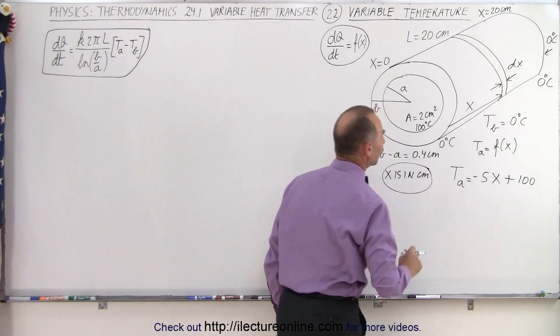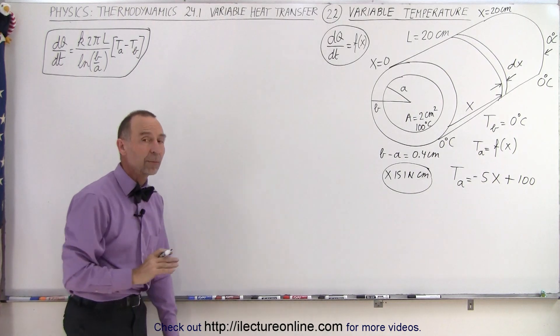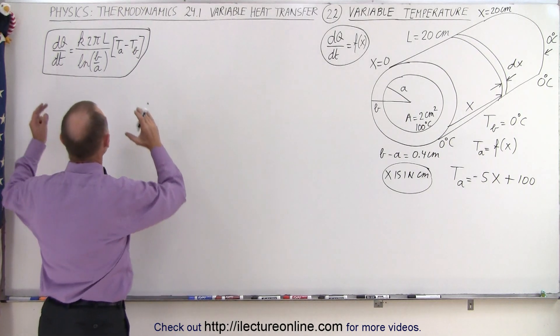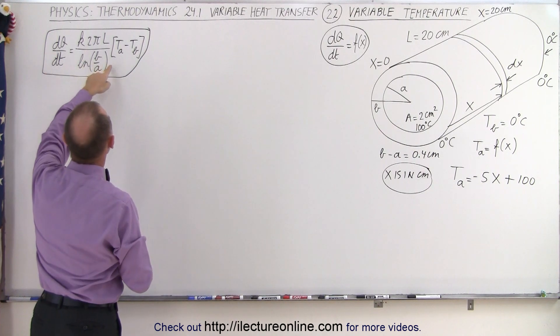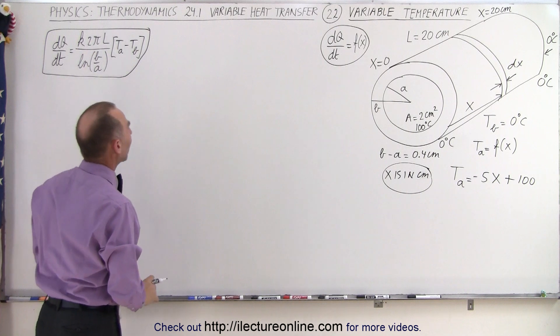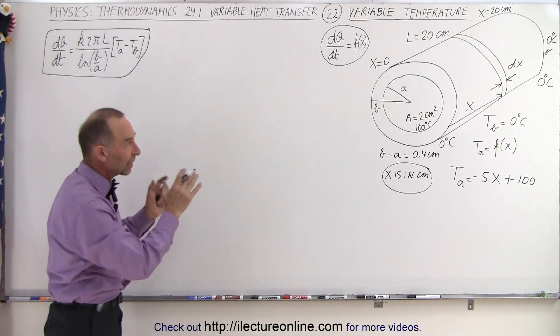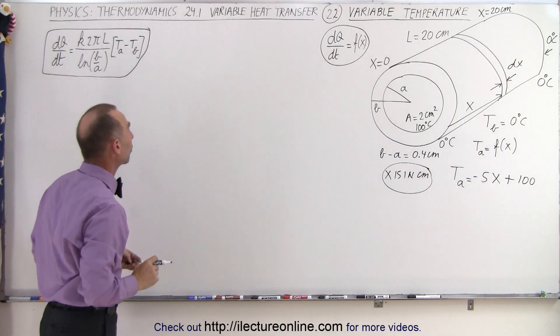We kept the equation that we derived in the previous couple of videos. This is the dq/dt as a function of inside and outside temperatures, and a function of the inside and outside radii. So we need to keep that in mind as well. I think now we're ready to plug that into our equation here.